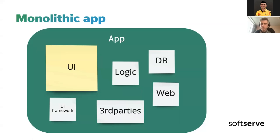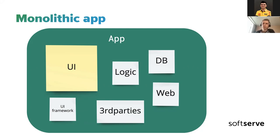This is a general problem in development, and people have already found solutions like clean architecture or Google's architectural approach. If you haven't heard about it, please check it out — it's really important. As part of this presentation, I'd like to highlight a few other problems with the monolithic approach. The first one is related to application size.